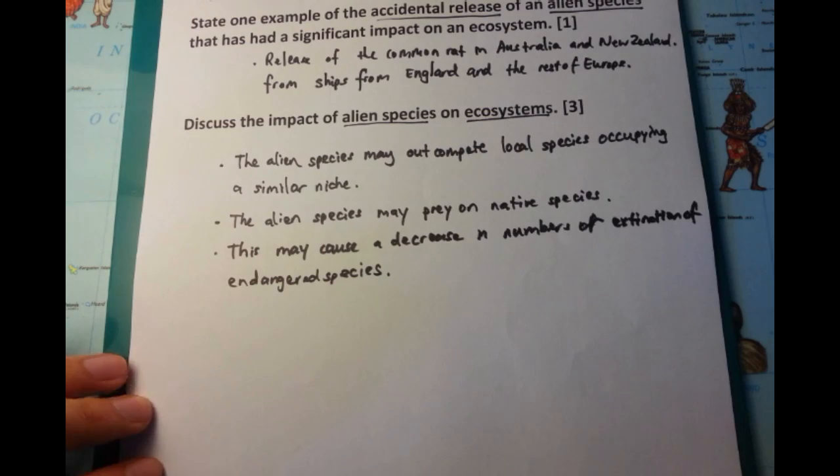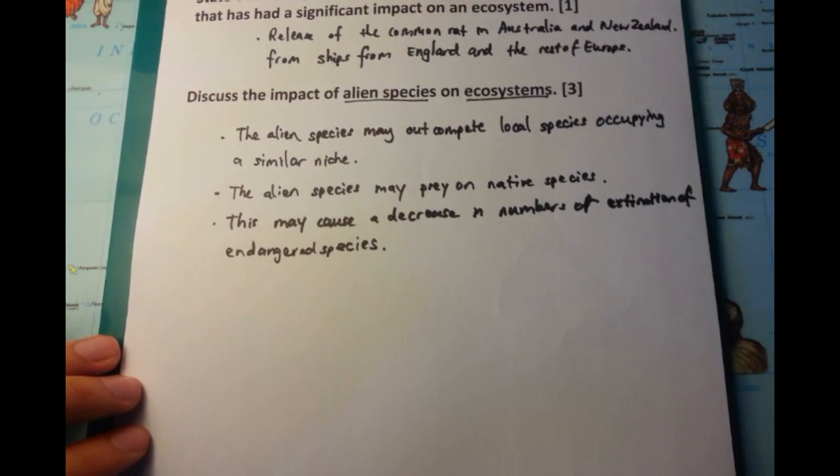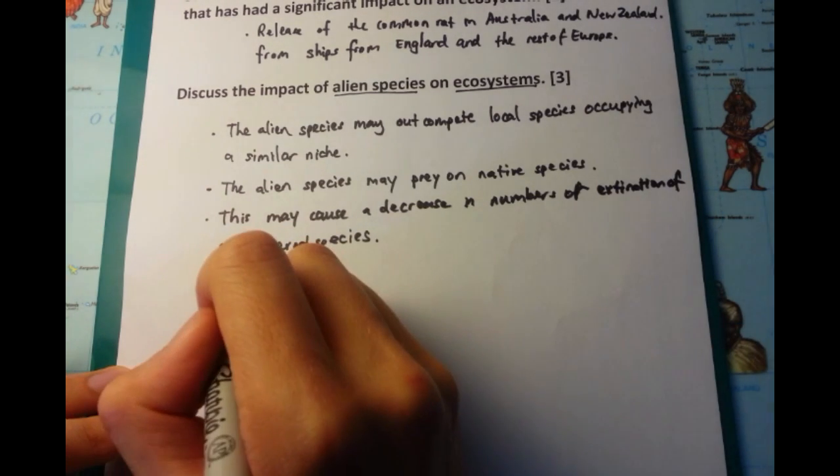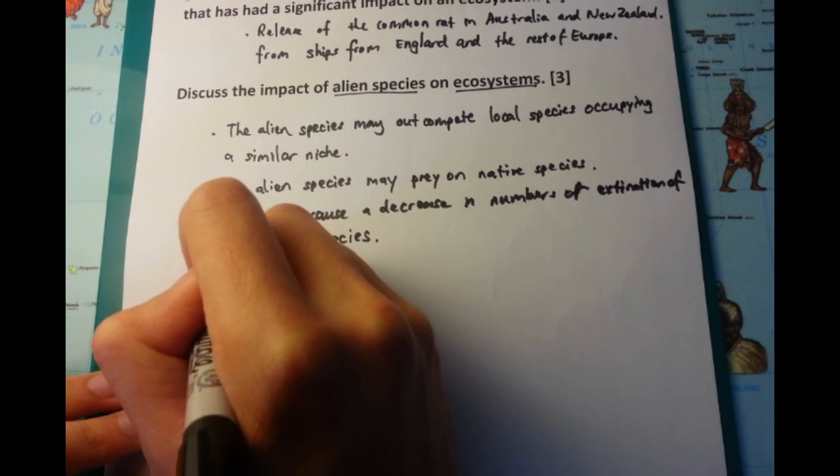And when I think of the common rat, I think of a very dirty animal as well. So I think that alien species may introduce new diseases to the local ecosystem, and this could damage them particularly so.